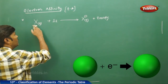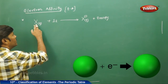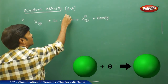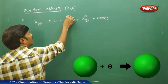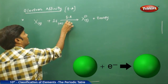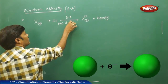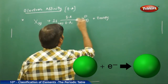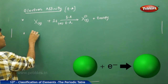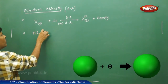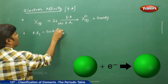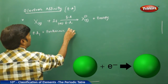Because it is gaining one electron, the neutral isolated gaseous atom gains one electron, we call this electron affinity one. Because it is releasing energy, electron affinity one is always exothermic in nature.